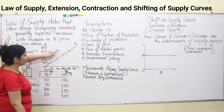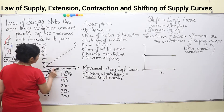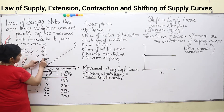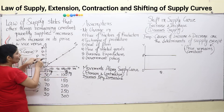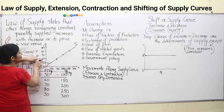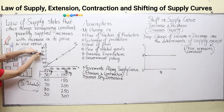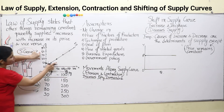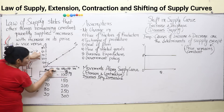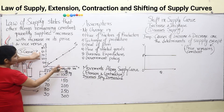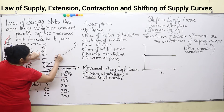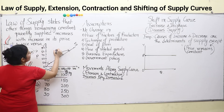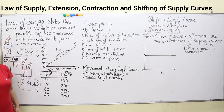For example, when your price was 60 rupees, your supply was 150 kg — this is your initial point. But if the price of sugar increases from Rs. 60 to Rs. 80, your quantity supplied increases from 150 kg to 250 kg. In that case, your supply moved from 150 to 250 kg — you are extending. This is extension of supply.